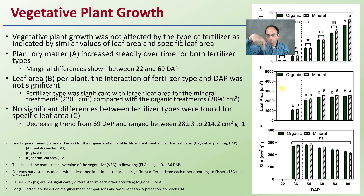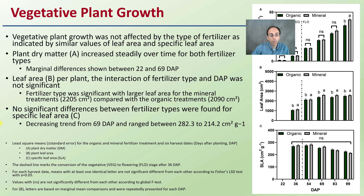For leaf area per plant, the interaction of fertilizer type and days after planting was not significant. However, fertilizer type was significant, with larger leaf area for mineral treatments compared to organic treatments — though only by a slight margin. Organic is shown in green bars and mineral in black and white bars. No significant difference between fertilizer types was found for specific leaf area.